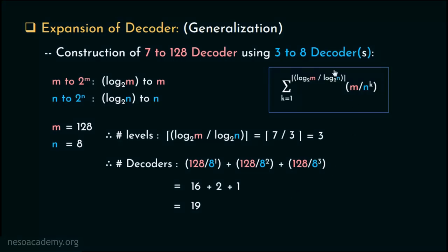This is how expansion of decoders works — higher configuration decoders are created using decoders with lower orders. To find the total number of decoders needed, we can use this formula, but remember to change the configuration before applying it. If you want to explore more, a similar concept using multiplexers in the MUX series has already been explained in our digital electronics course. In the next session, we will learn another approach of decoder expansion. Thank you all for watching.